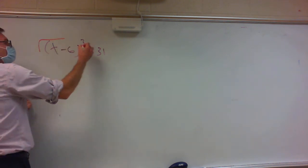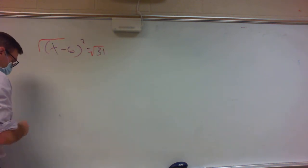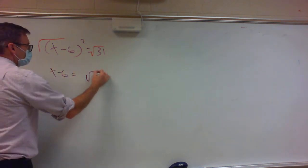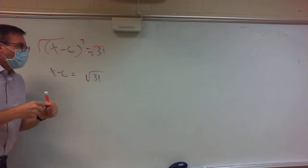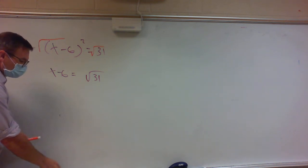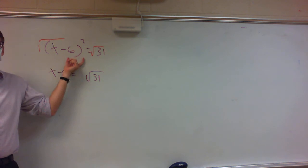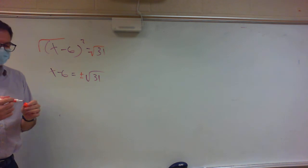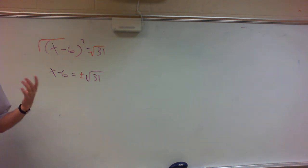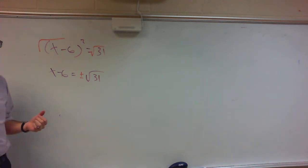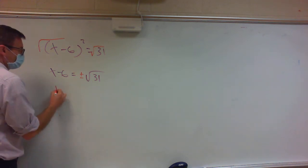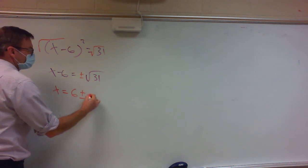If you take the square root, whatever you do to one side you've got to do to the other. That gives me x minus 6 equals the square root of 31. In solving square root equations, any time you take the square root of both sides you have to put plus or minus. Then to get x by itself, add 6 to both sides, giving x equals 6 plus or minus the square root of 31.